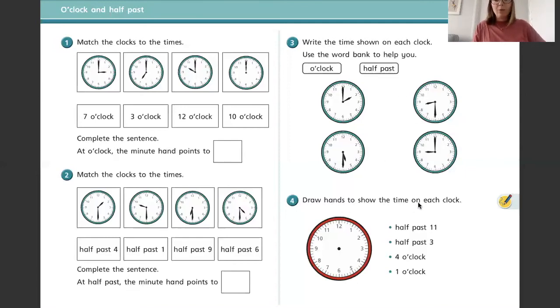Question four - draw hands to show the time on each clock. So if you've made a clock, then you could have a go at making on your clock. But if you've got a printer and you can print out the sheets attached, the blank ones, you can have a go at showing them on here. Or if you're going to print out this sheet, you could use different colored pencils to show each of those times.